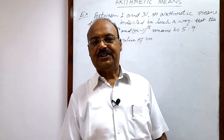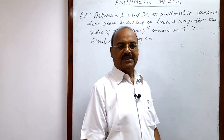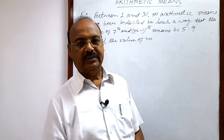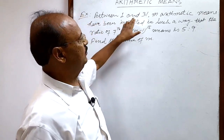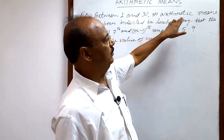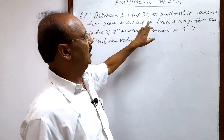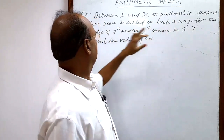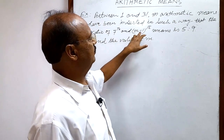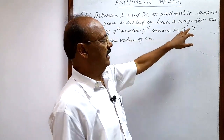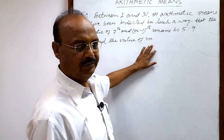Welcome students. Let us see a question from the topic arithmetic means. First of all, try to understand the question. Between 1 and 31, m arithmetic means have been inserted in such a way that the ratio of the 7th and (m−1)th means is 5 to 9. Find the value of m.